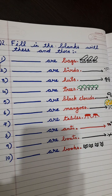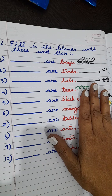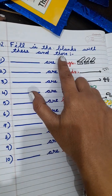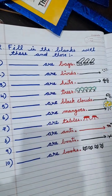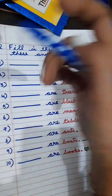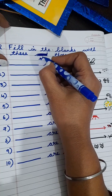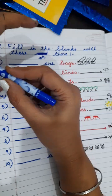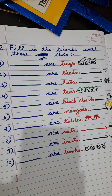Good morning students. In this video we are going to see some sentences where you have to fill in the blanks. These and those use karna hai — yaa 'are' aana chahiye hum pe — and these those use karna hai in sentences mein.